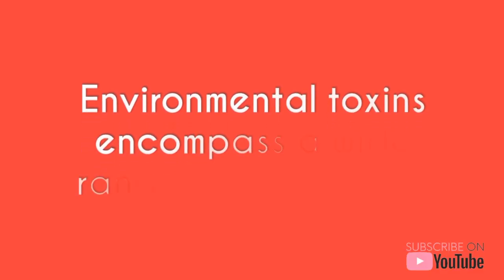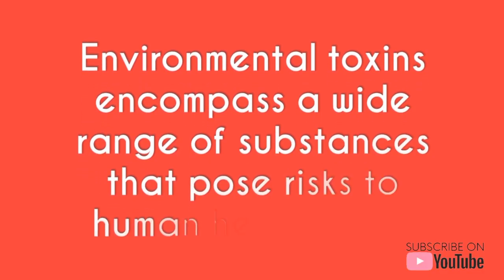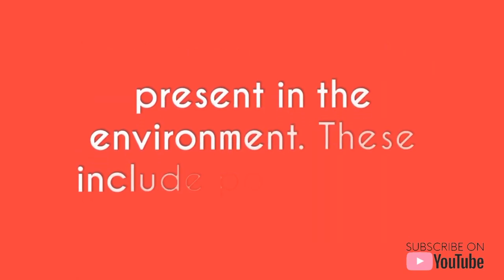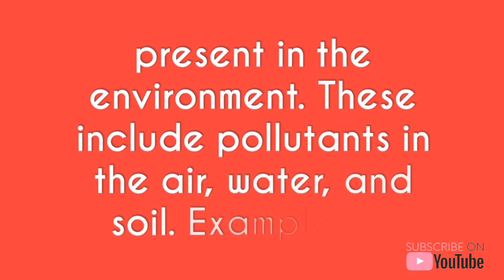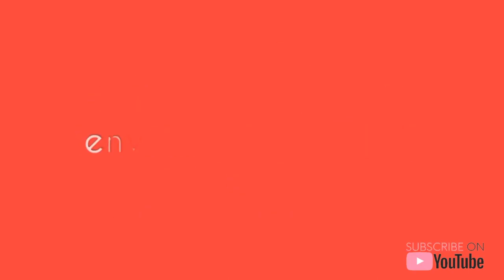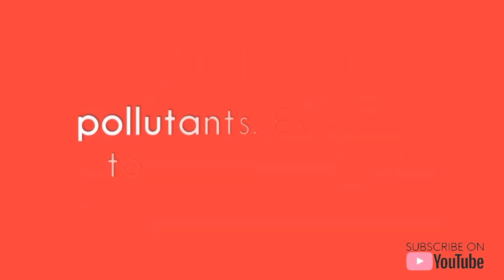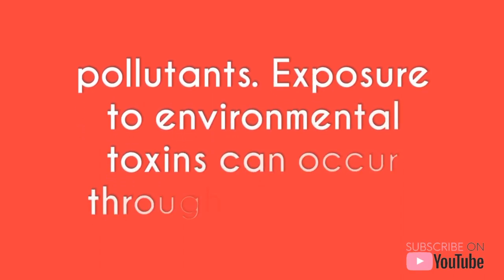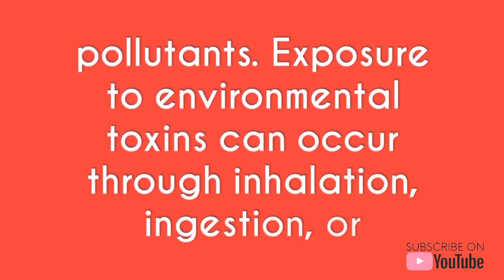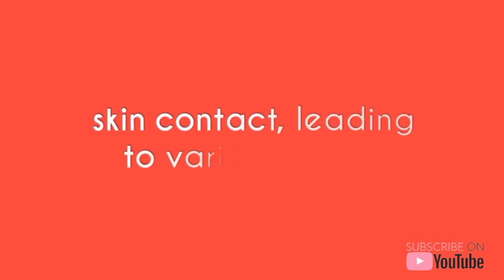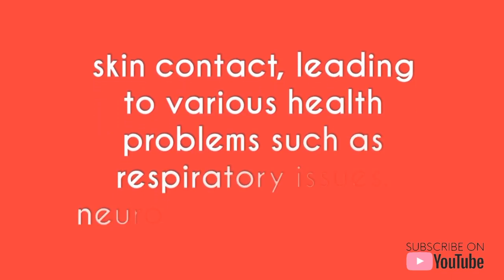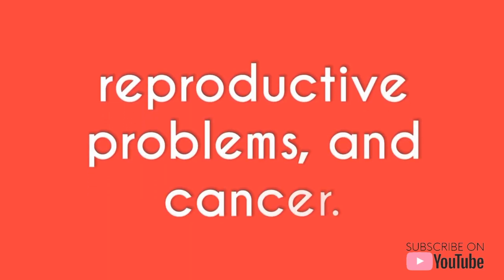Environmental toxins encompass a wide range of substances that pose risks to human health when present in the environment. These include pollutants in the air, water, and soil. Examples of environmental toxins include heavy metals like lead, mercury, and cadmium, as well as industrial chemicals. Exposure to environmental toxins can occur through inhalation, ingestion, or skin contact, leading to various health problems such as respiratory issues, neurological disorders, reproductive problems, and cancer.